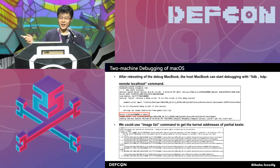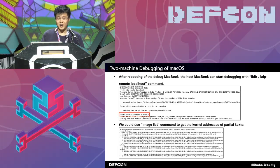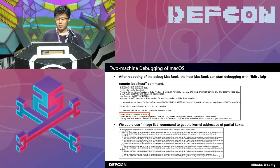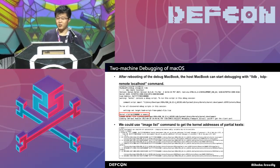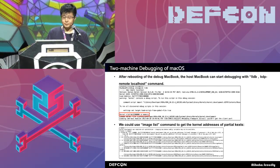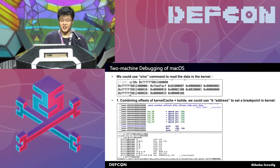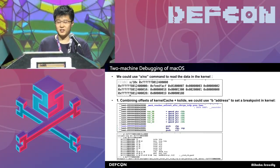Note that we can get the kernel slide immediately, which is very useful for debugging the kernel. Also, we can use commands like image list to get the kernel addresses of partial kernel extensions. Note that we can only get partial kernel extensions this way — if we want to get all kernel extensions, we need some other ways. Just like GDB, we can use x/NX to read the data in the kernel.